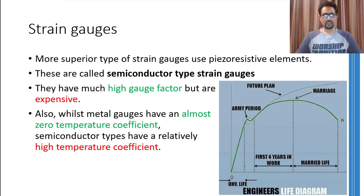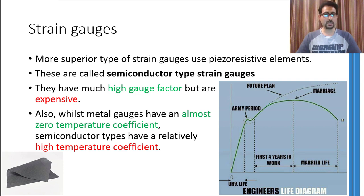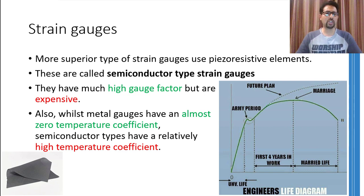It is not the only option to measure the strain using a wire or a metal foil. Piezo-resistive elements may also be used to measure the strain. Piezo-resistive materials are materials which change their resistance if force is applied to them. Therefore, strain gauges can also use piezo-resistive elements to measure the applied force. These type of strain gauges are called semiconductor type strain gauges and they have a much higher gauge factor as compared to wire or metal foil strain gauges. However, these devices are much more expensive. Moreover, semiconductor or piezo-resistive materials used to make these strain gauges show a large change in resistance due to temperature change compared to metal or foil type strain gauges. Therefore, arrangement should be done to counter the effect of change in temperature, otherwise a change in temperature will be taken as a change in strain.